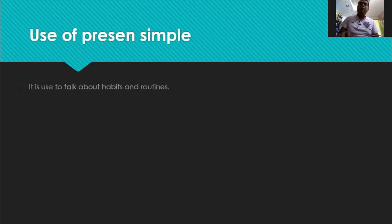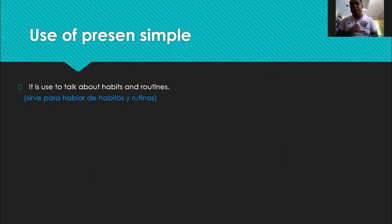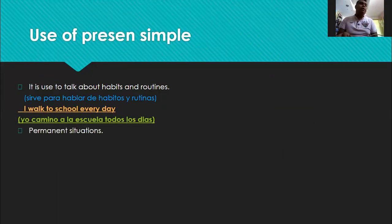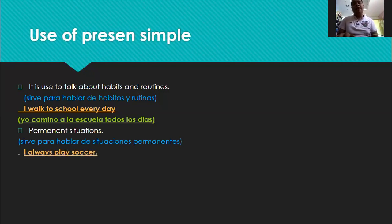Then we saw the present simple — vimos el uso del presente simple. Remember, it is used to talk about habits and routines — sirve para hablar de hábitos y rutinas. Example: I walk to school every day — yo camino a la escuela todos los días. Hábito y rutina. We use it to talk about permanent situations — sirve para hablar de situaciones permanentes. Example: I always play soccer — yo siempre juego al fútbol.